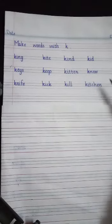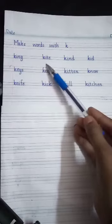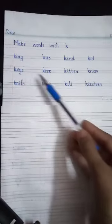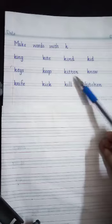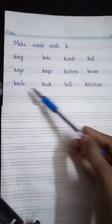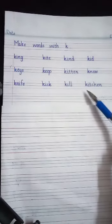Let's repeat the words. King. Kite. Kind. Kid. Keys. Keep. Kitten. No. Knife. Kick. Kill. Kitchen.